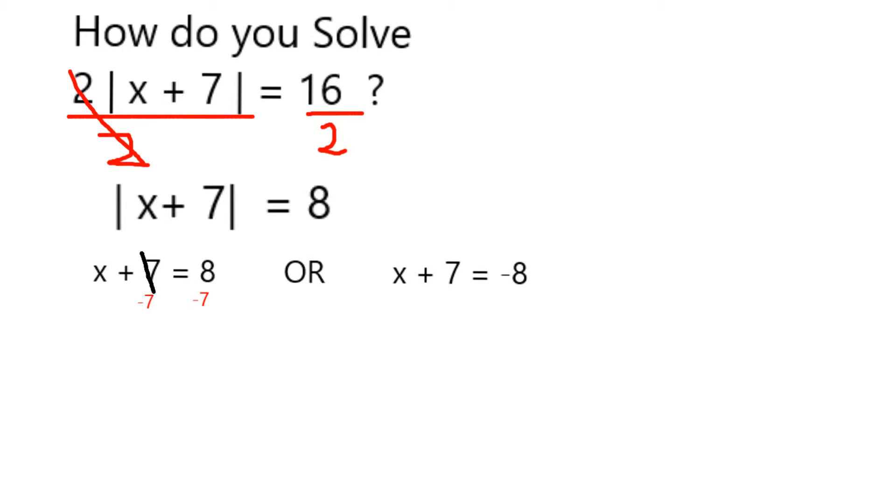If x plus 7 is equal to positive 8, subtracting 7 from both sides shows that x must equal 1. If it's equal to negative 8, subtracting 7 on both sides gives us x equal to negative 15.